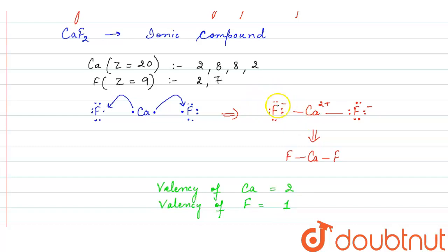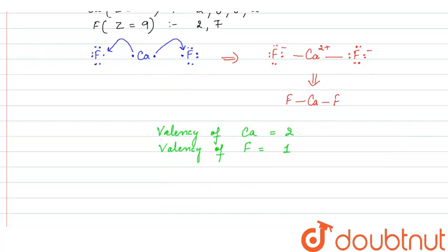It is making 1 bond with the calcium atom. So its valency is 1 as it is gaining 1 electron. So the answer of the question will be 1.